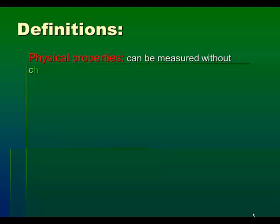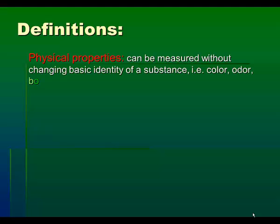Let's start out with a rather extensive list of definitions. Physical Properties are properties that can be measured without changing the basic identity of a substance. Examples are color, odor, boiling point, and density.